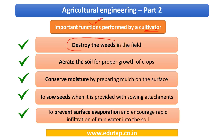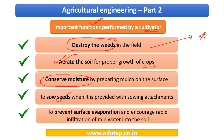The important functions of a cultivator: it destroys weeds in the field (primary function); it aerates the soil for proper crop growth; it conserves moisture by preparing mulch on the surface; it can sow seeds when provided with a sowing attachment; and it prevents surface evaporation while encouraging rapid infiltration of rainwater into the soil. Cultivators have many advantages and are very prominently used today.